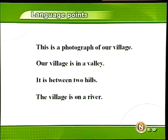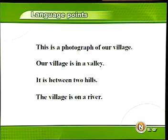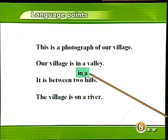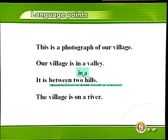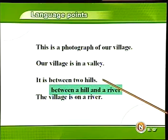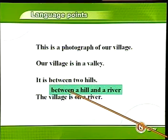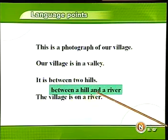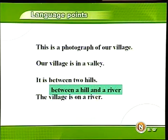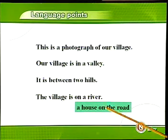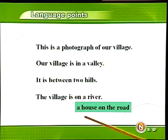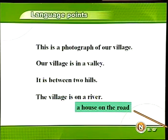这三句话讲的是我们的村庄的具体位置，用了三个介词短语。第一个是 in a valley，在山谷中，其中 in 和 a 连读成为 inner。第二个介词短语是 between two hills，在两座小山之间，between A and B 在什么和什么之间，比如 between a hill and a river，在一座小山和一条小河之间。第三个介词短语是 on the river，这个 on 并不是在河上的意思，而是靠近、临近的意思。再看一个例子：a house on the road，在公路旁边的房子。